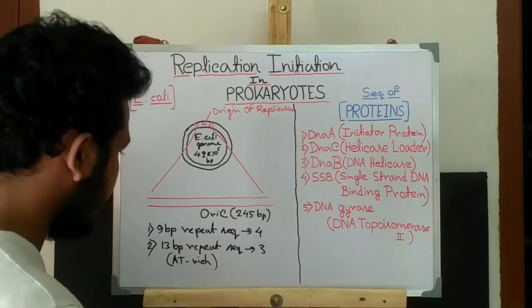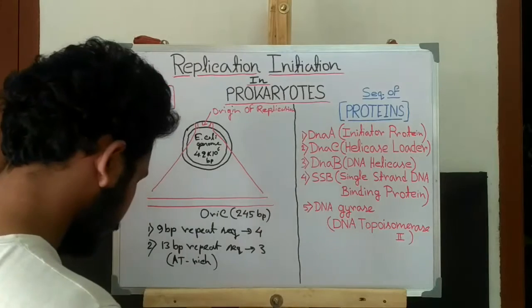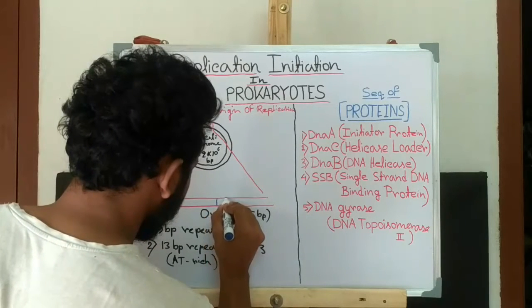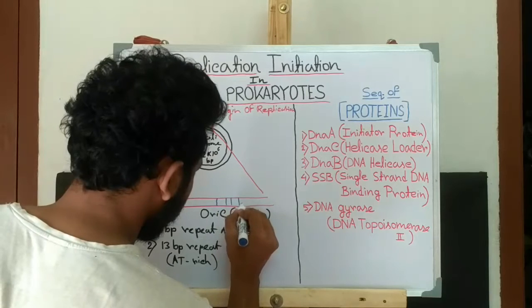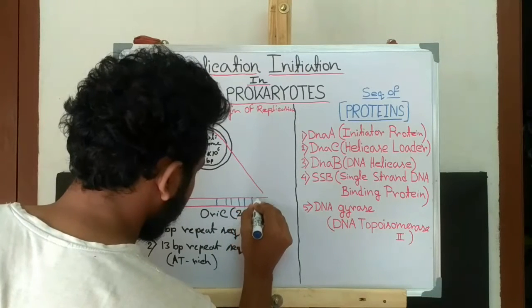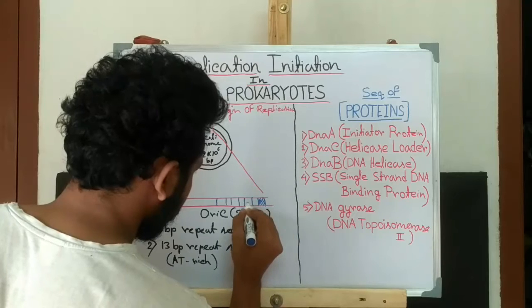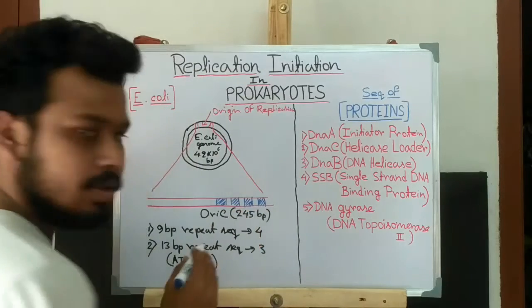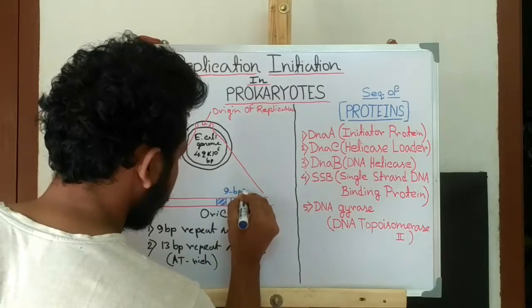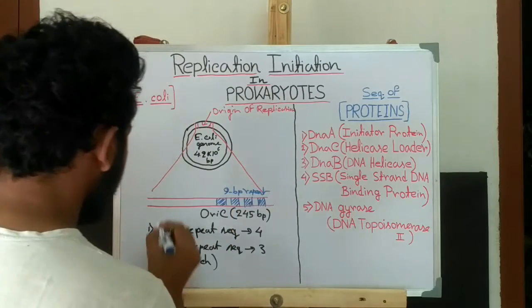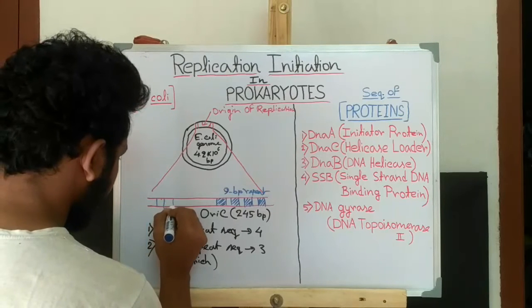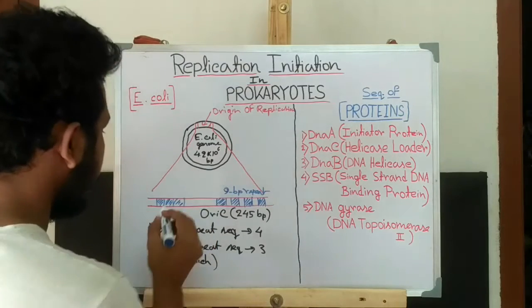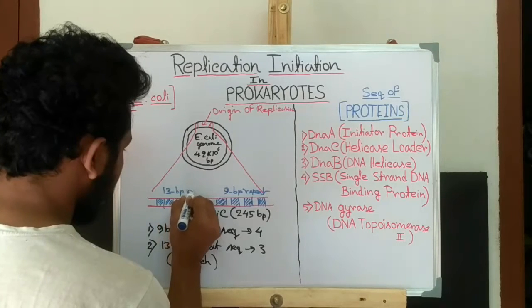Now how they present in the oriC region. 9-mer repeats are present like this. This is the 9-mer repeats, 9 base pair repeat. And here is a 13 base pair repeat.